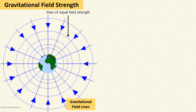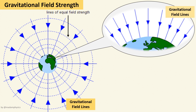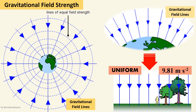Before we go any further, let's recap about gravitational field strength. For a massive spherical body, for example the Earth, the gravitational field lines are equally spaced and directed radially inwards towards the center. Near the surface of the Earth the field lines are almost parallel, showing that the gravitational field strength is uniform and constant in magnitude, which is 9.81 meters per second squared.